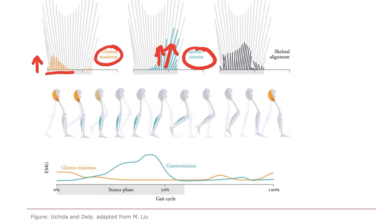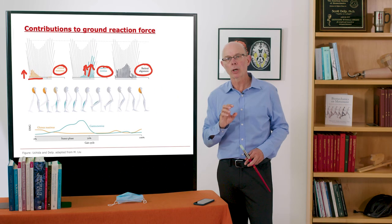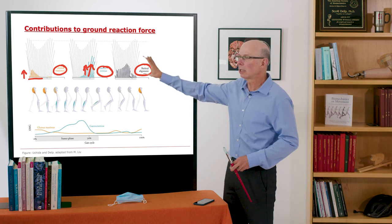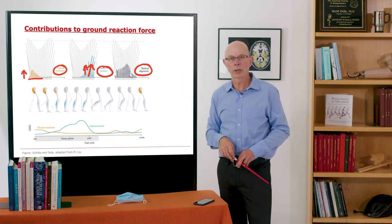Now, the last plot here is skeletal alignment. Remember muscles accounted for most of the ground reaction force but not all of it and the remainder comes from this skeletal alignment which we estimated here with our dynamic simulations.